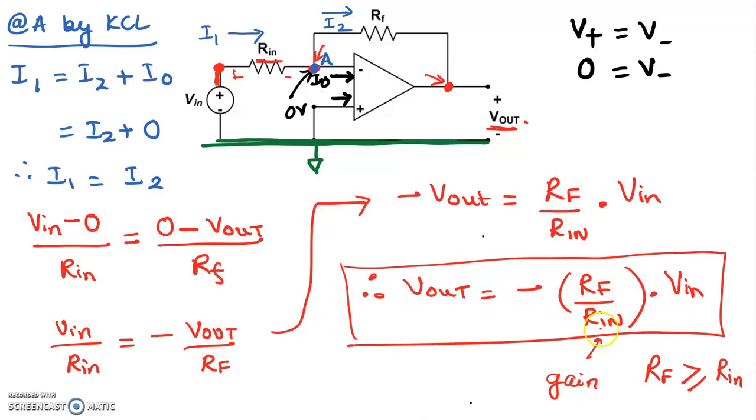Now if the voltage input was 1 volt and we have a gain of 10, my output voltage would be 10 times higher. So we would be getting 10 volts.